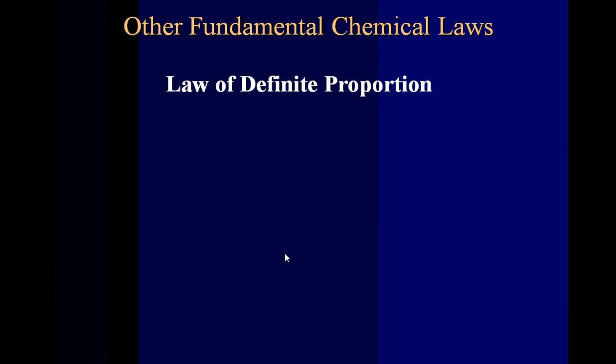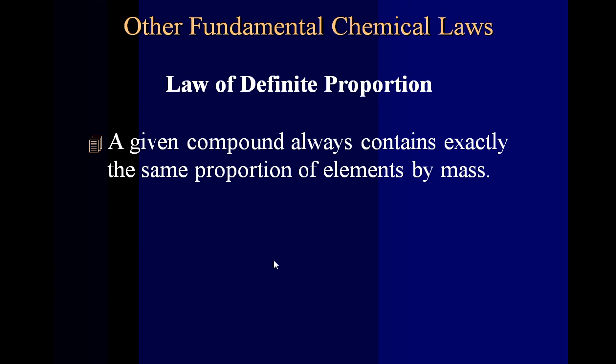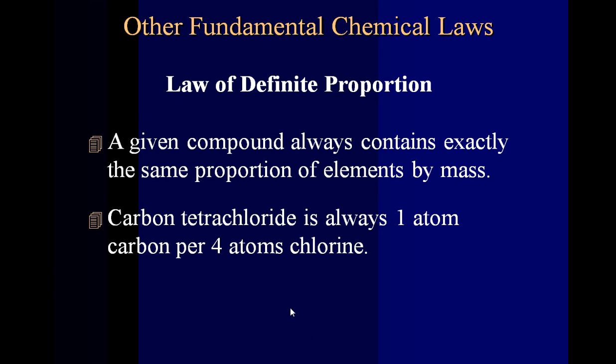Some other fundamental chemical laws, law of definite proportion, which states that if I look at a carbon dioxide molecule here in Avon, it's going to be the same type of molecule if I were standing on the surface of Mars. It would still be made up of one carbon and two oxygens. Law of definite proportions always says that there's a given proportion of the element by mass within a compound. Here's an example. Carbon tetrachloride. There's always one atom of carbon for every four atoms of chlorine. No matter where you're at, that'll still be true.